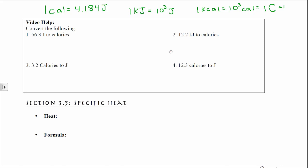Let's start the first problem. You're given 56.3 joules. I want to get into calories, so I'll set up unit cancellation — joules go on the bottom so they cancel, and calories go on top. Because I know the direct relationship between joules and calories, this is just going to be a one-step problem: one calorie equals 4.184 joules. Remember, the relationship is exact, so we are not considering significant figures for that conversion factor.